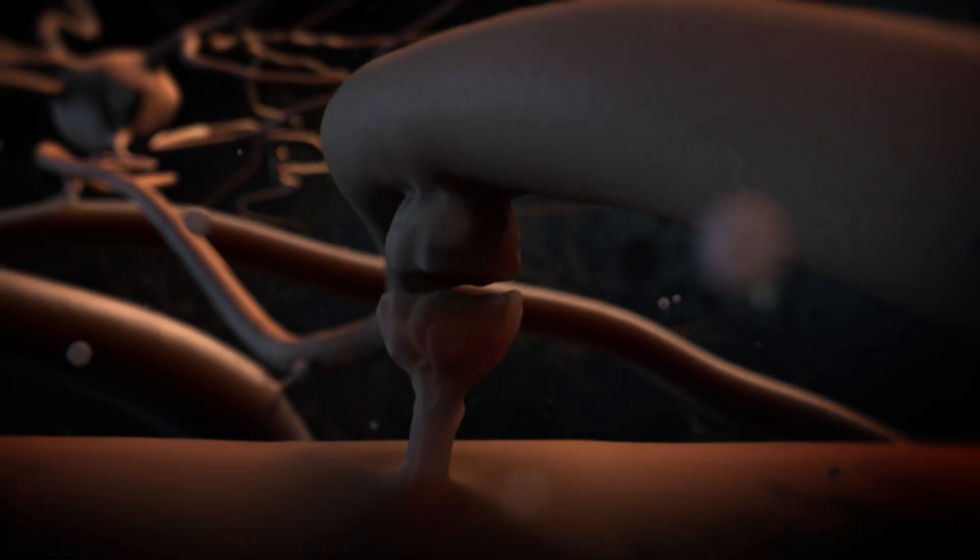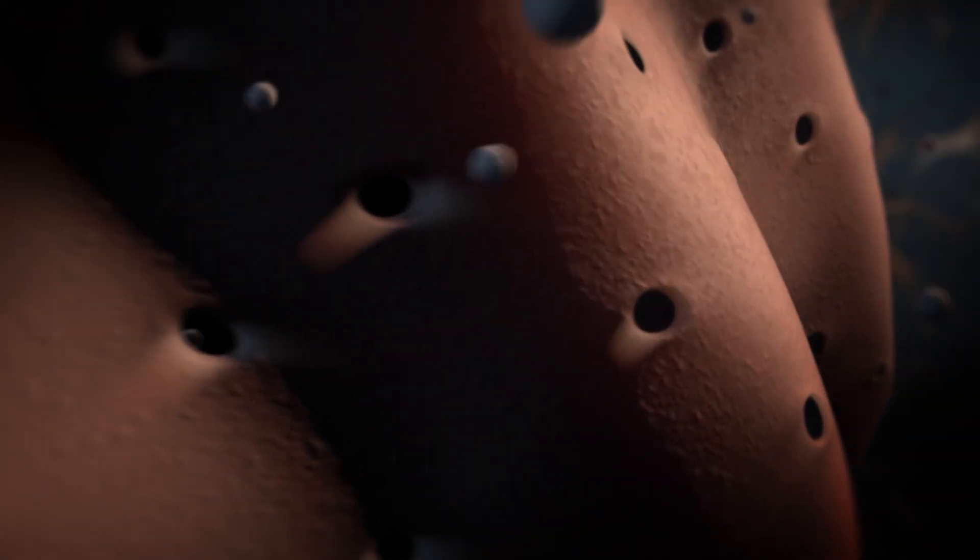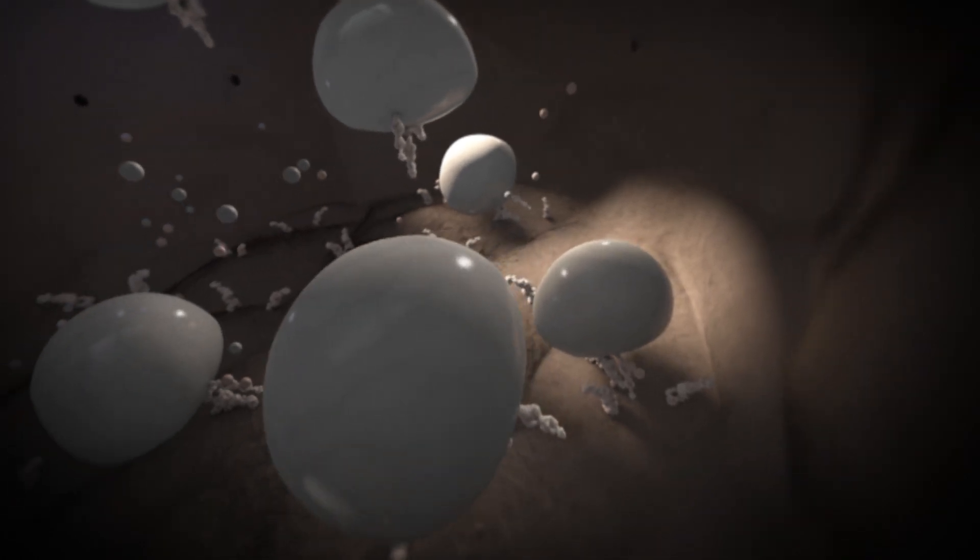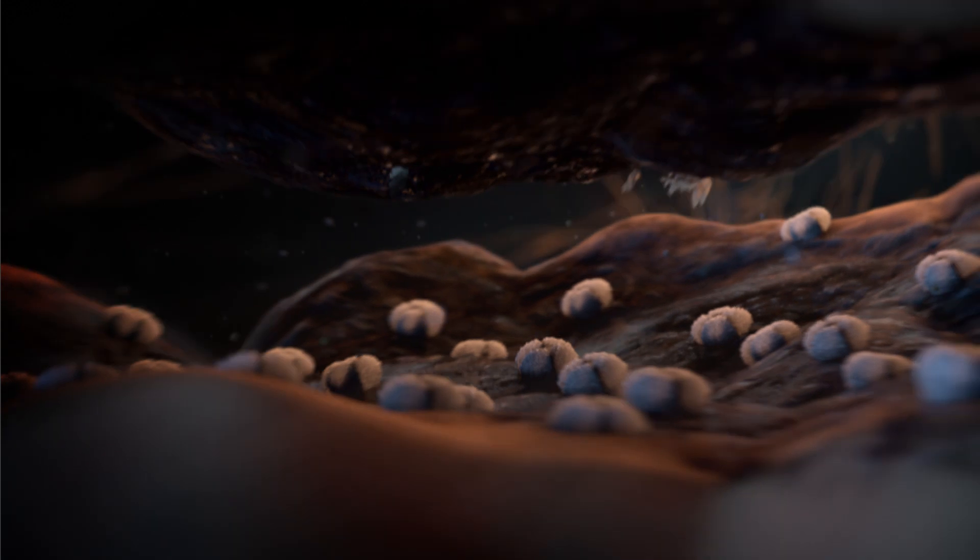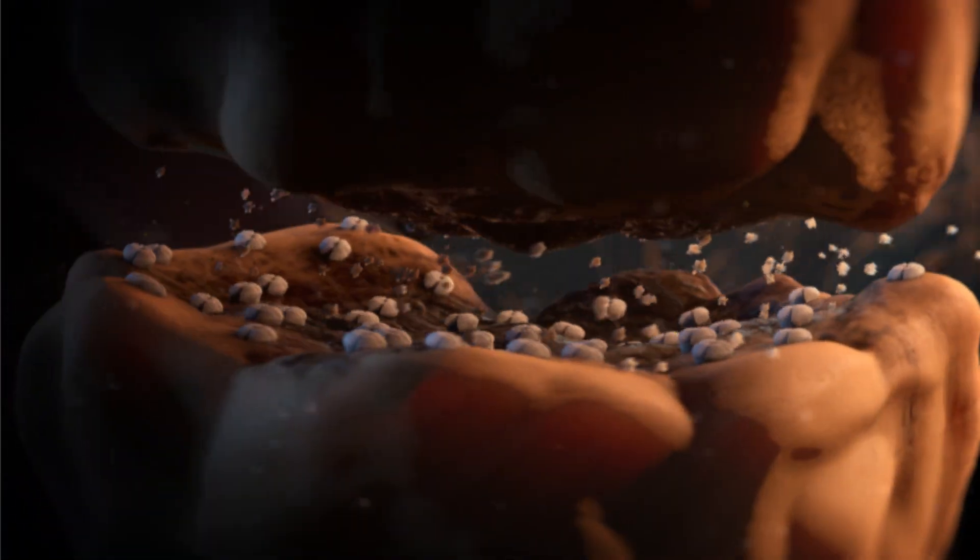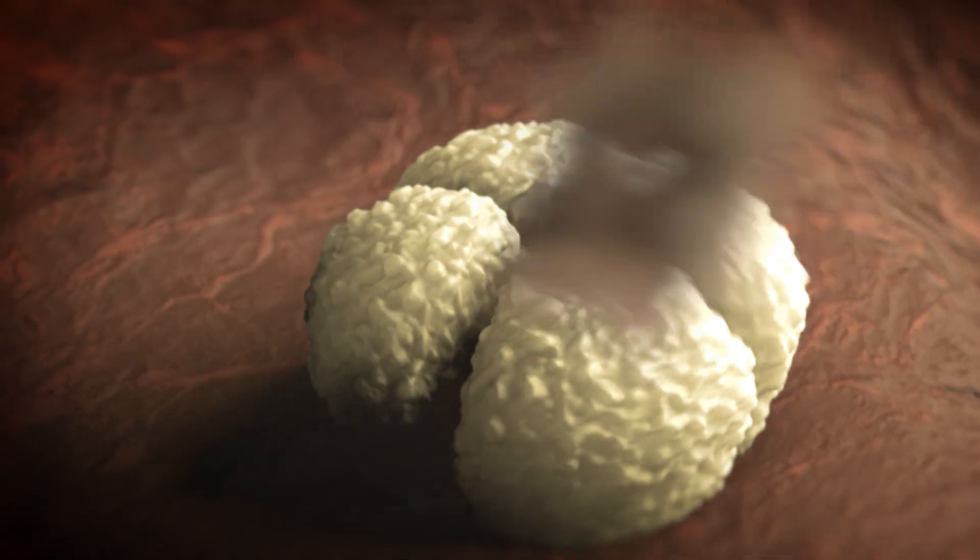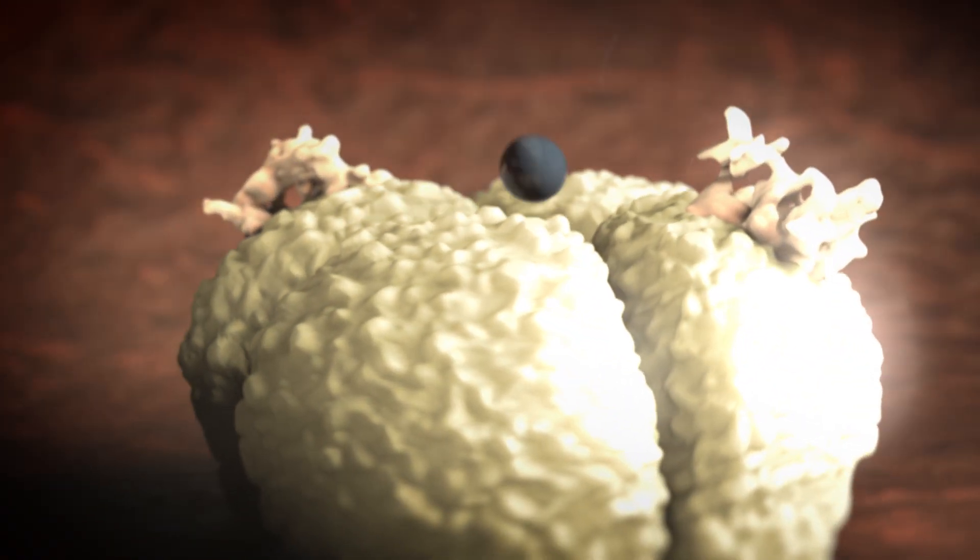At specialized contact sites called synapses, electrical signals trigger the regulated release of neurotransmitters stored in synaptic vesicles. These chemical messengers bind and activate post-synaptic receptors, initiating a new electrical signal in the next cell.